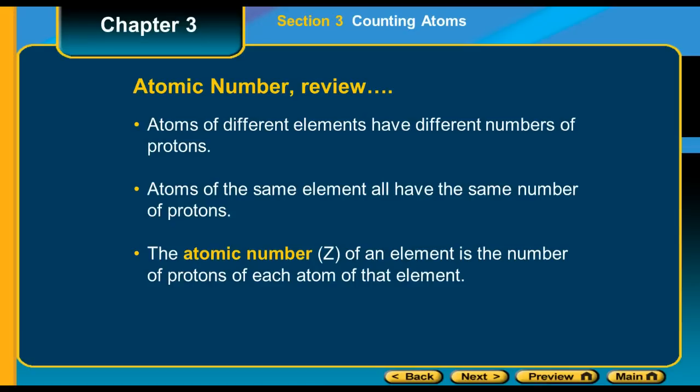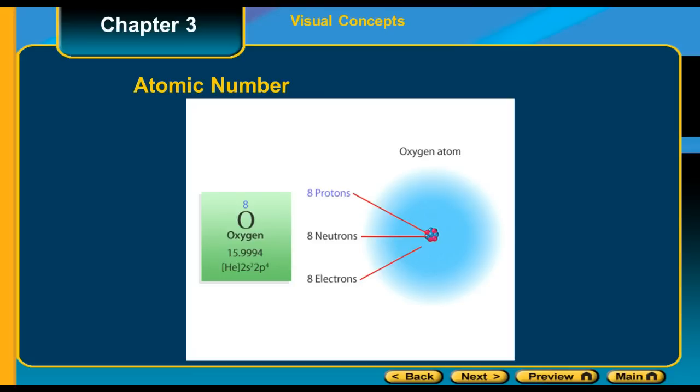Sometimes it's referenced with the letter Z. In this graphic you can see that oxygen has eight protons, eight neutrons, and eight electrons, so its atomic number would be eight.